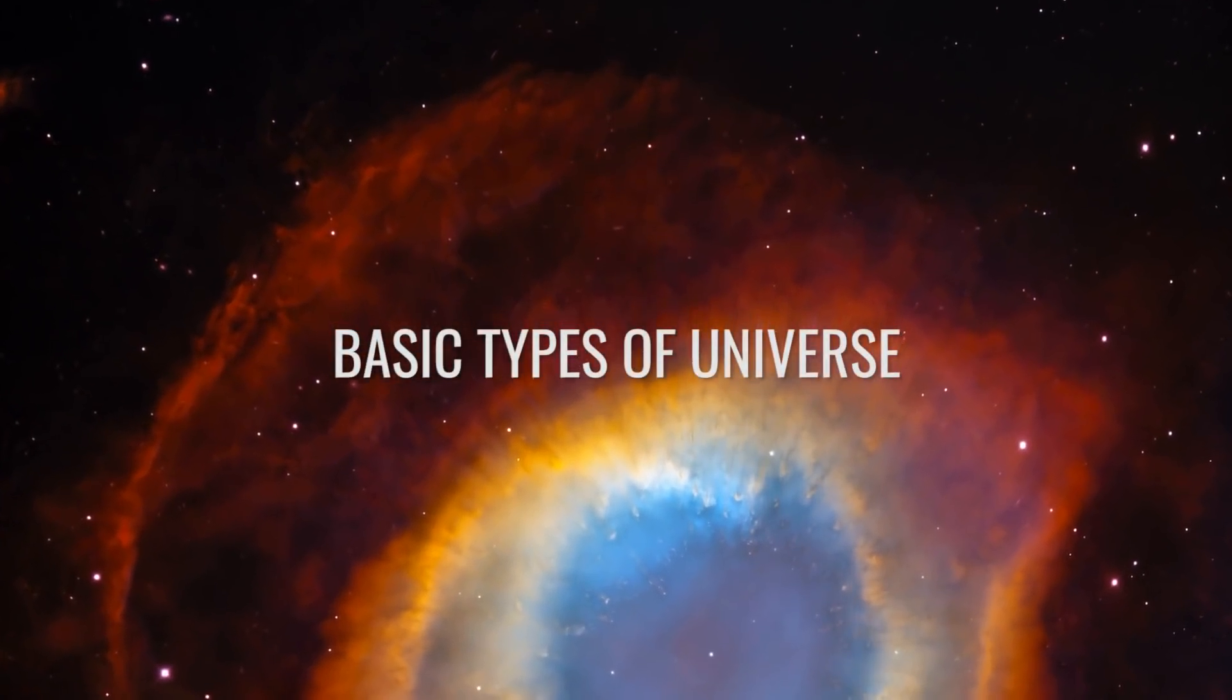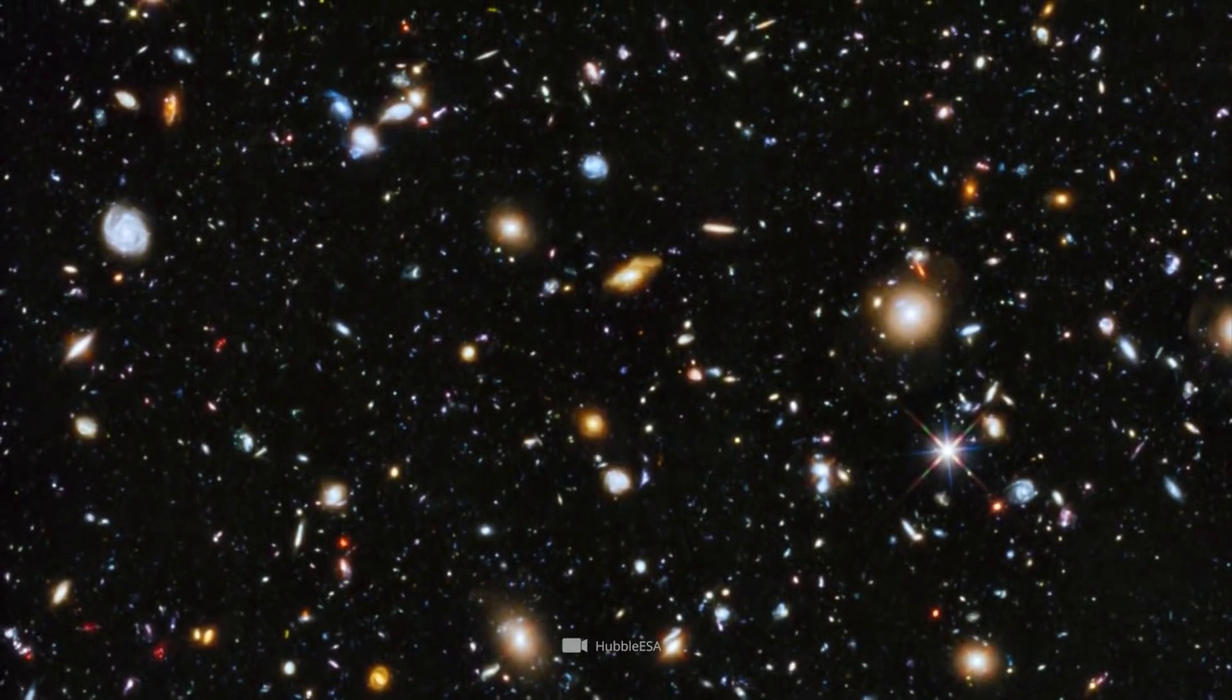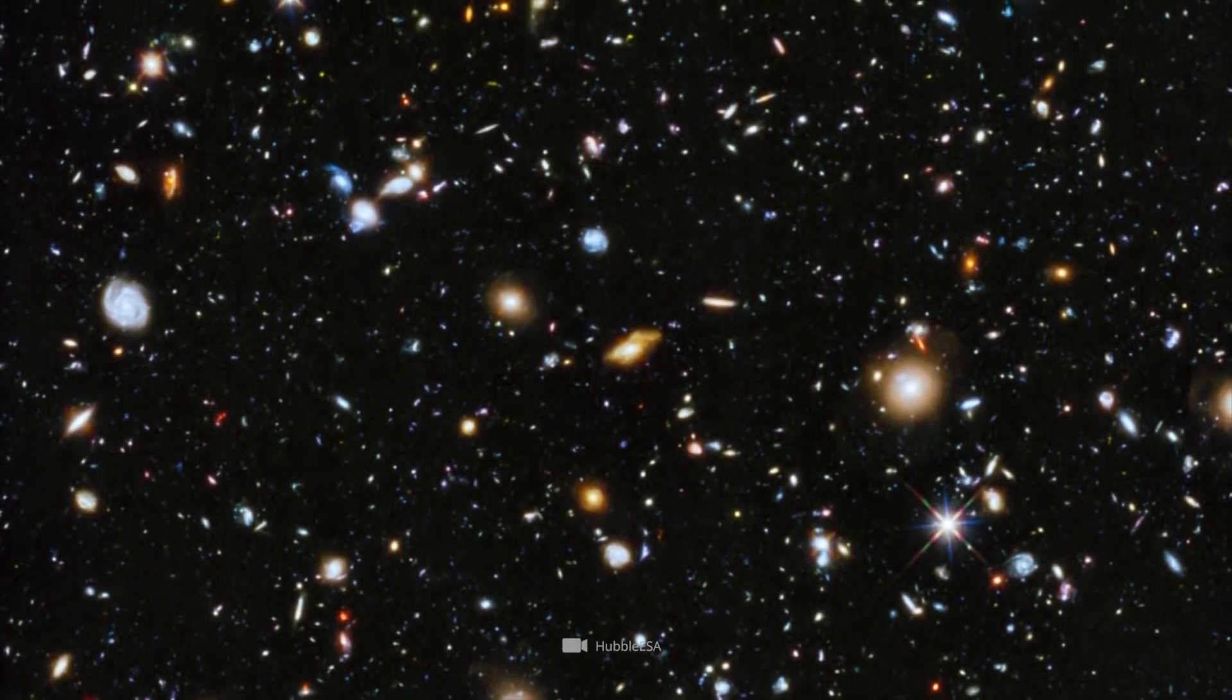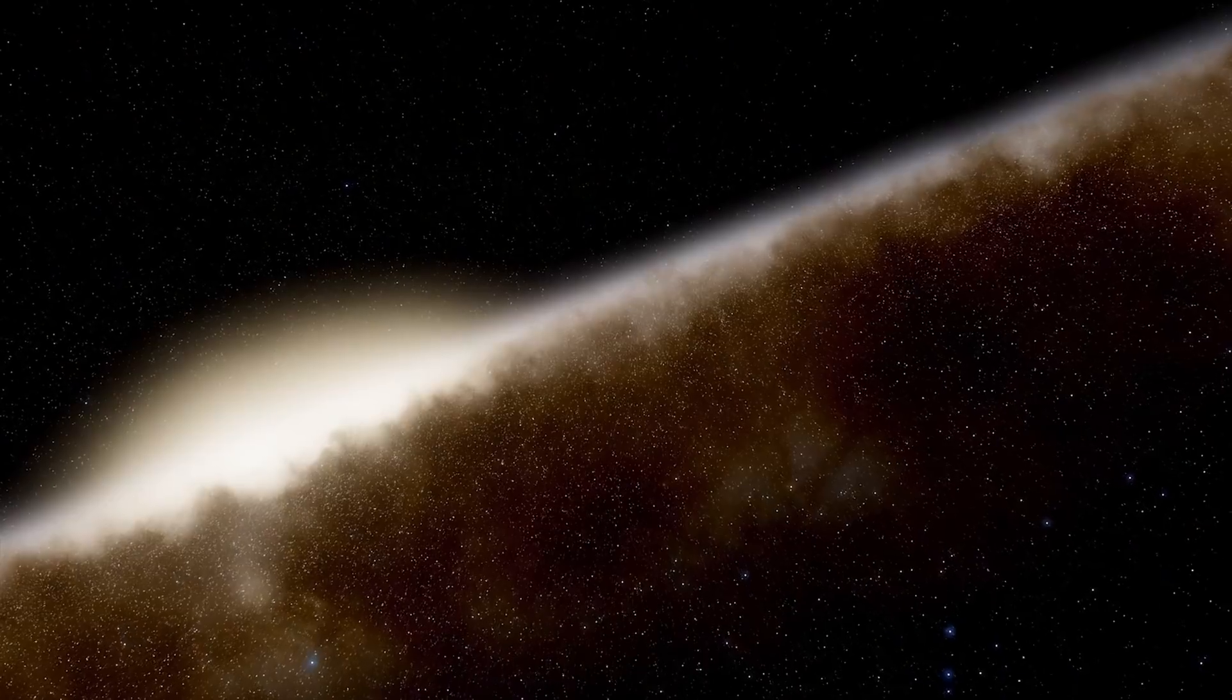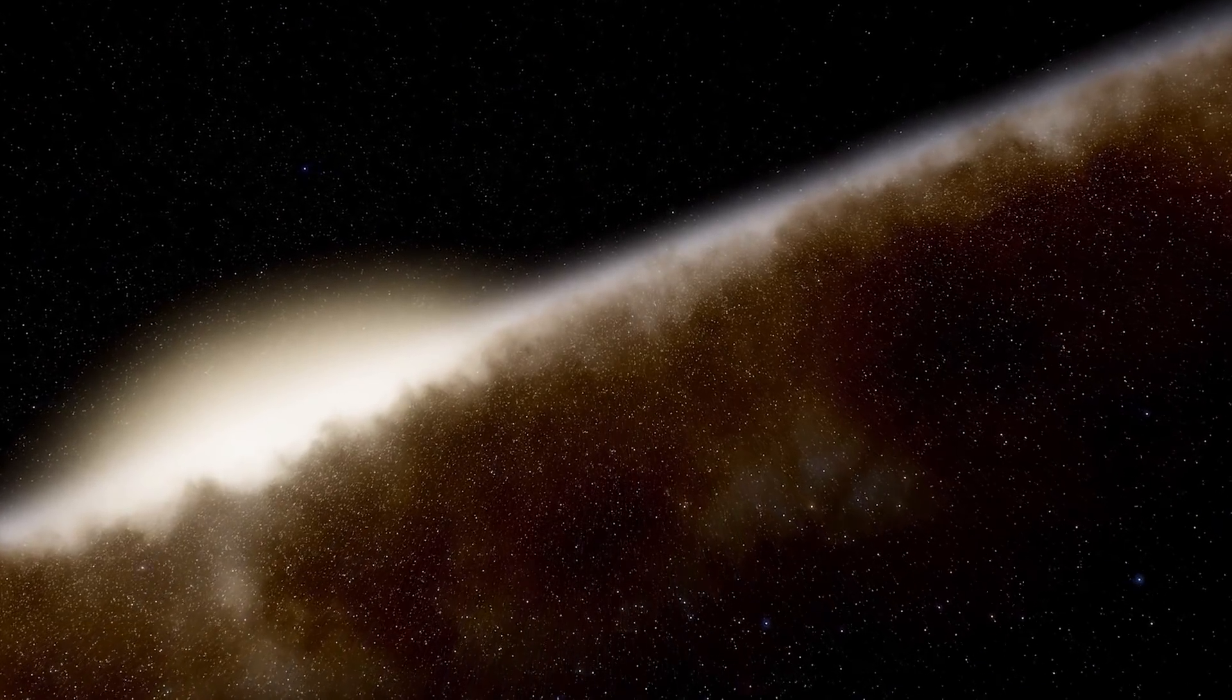Basic types of universe. Before we turn to the question of how it's possible to define the edge of an infinite universe, we should first take a look at the three different basic types of the cosmos described in Albert Einstein's general theory of relativity.